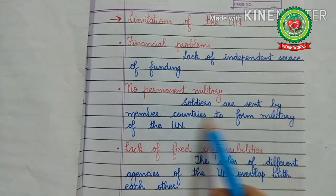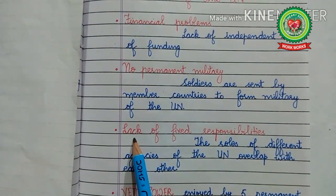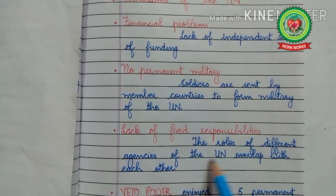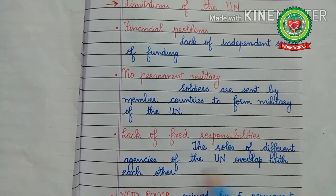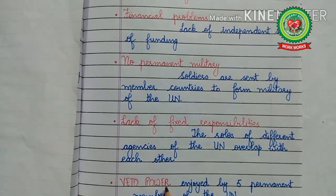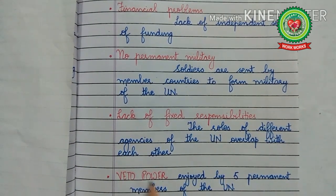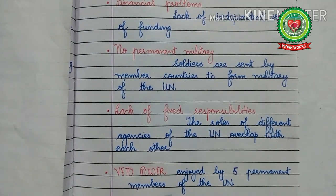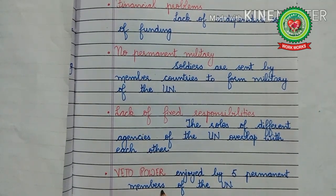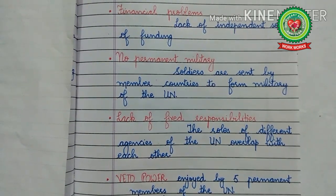The second limitation is no permanent military — soldiers are sent by member countries to form the military of the United Nations. Third, lack of fixed responsibilities — the roles of different agencies of the United Nations overlap with each other. The last limitation is veto power — the authority to reject something that has been proposed — which is enjoyed by the five permanent members: France, Russia, America, China, and England.